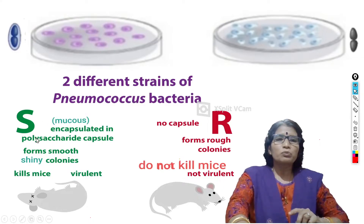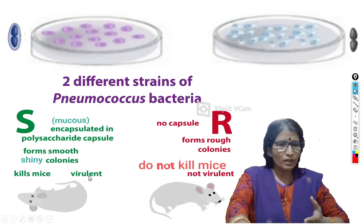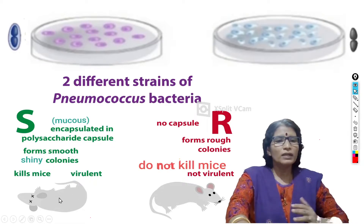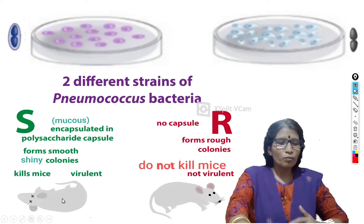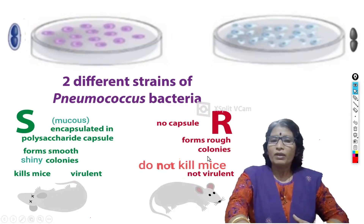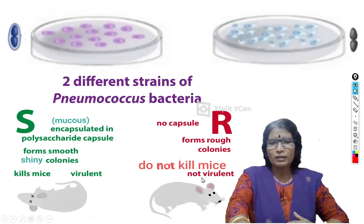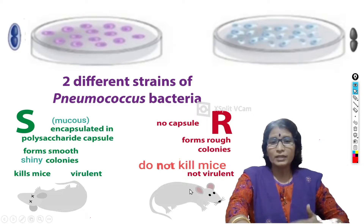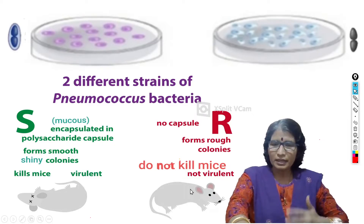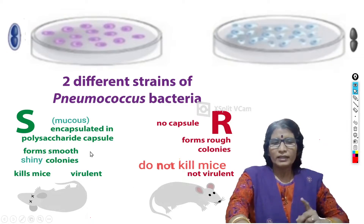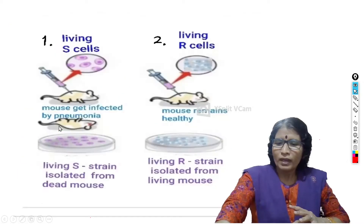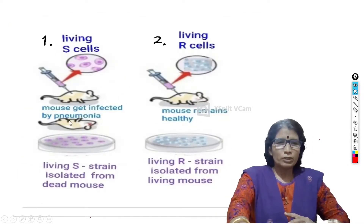When we inject smooth bacteria into a mouse, since they are virulent and poisonous, the mouse gets affected by pneumonia disease and dies. When we inject rough bacteria into a mouse, since they are not virulent, the mouse does not get pneumonia, remains healthy, and does not die. So in this way there are two types of strains.